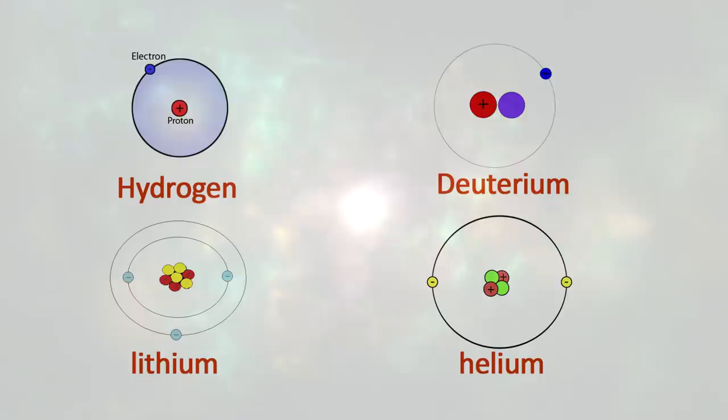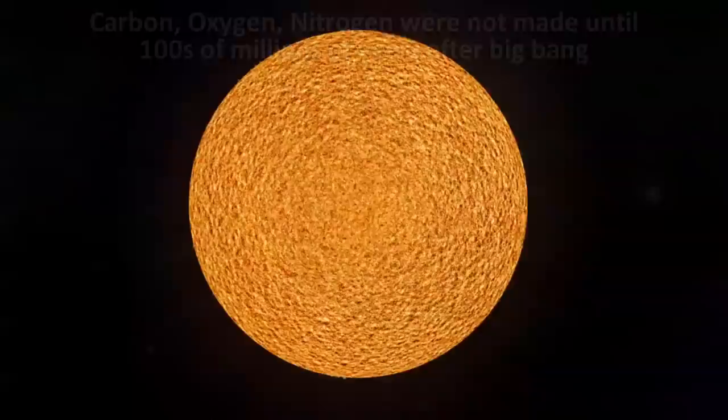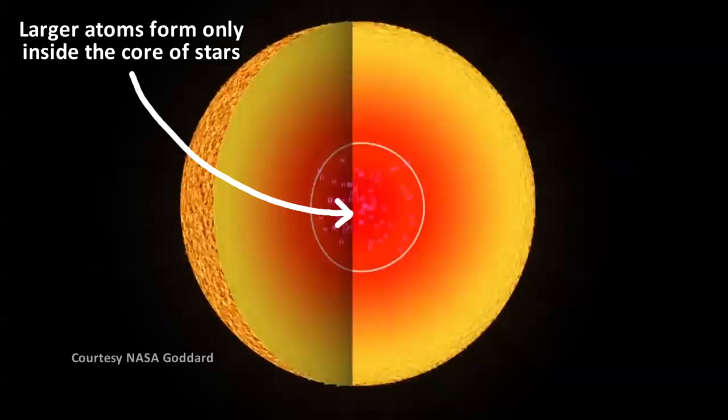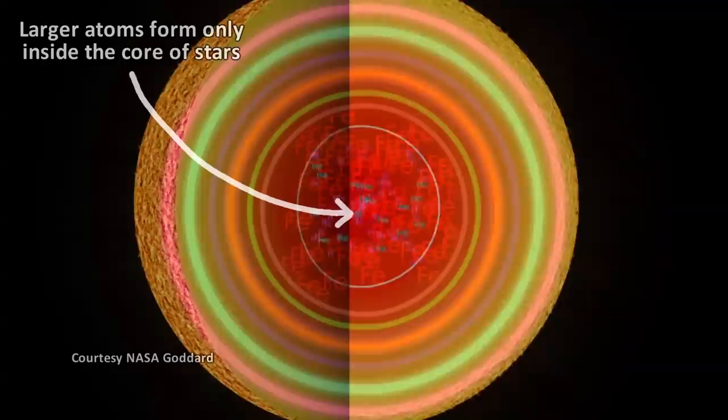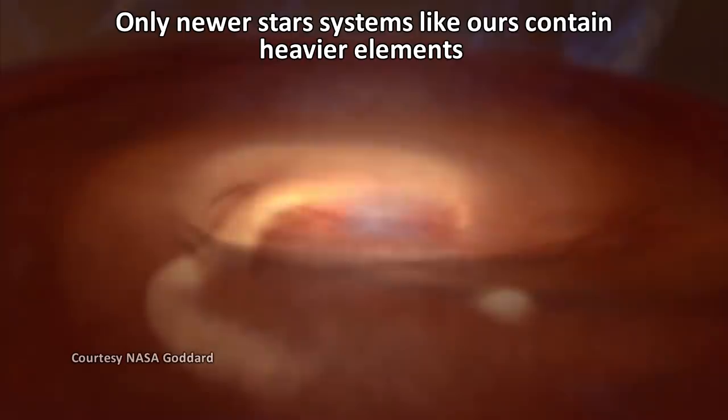But after the big bang, only the lightest elements, hydrogen, deuterium, helium, and lithium were formed. The heavier elements were not produced until hundreds of millions or billions of years later. This time was needed in order for large stars to form and assemble these elements in their core, because that's the only place where fusion can form the larger heavier atoms of the periodic table. When these larger stars exploded, they spewed all these atoms needed for life into space. Newer stars like our sun formed, and planets also formed around it, containing these life-giving elements.